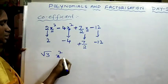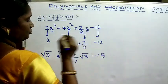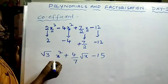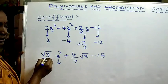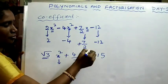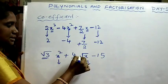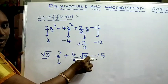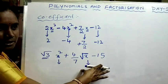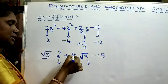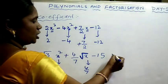Consider √3·x² plus (4/7)·√x minus 15. The coefficient of x² is √3. You might have a doubt whether this is a polynomial, since √x means x^(1/2), which is not an integer power — so this algebraic expression is not a polynomial. But if they ask for the coefficient of √x, you can write it as 4/7.